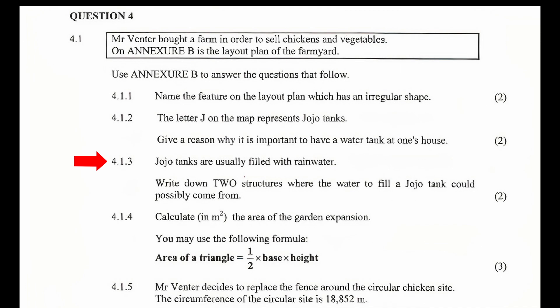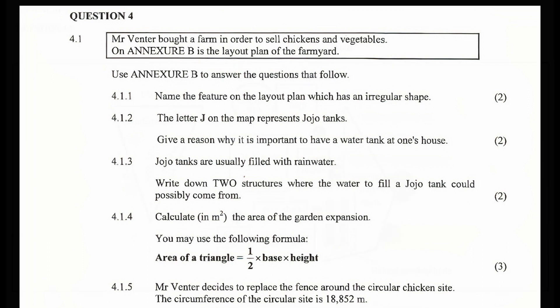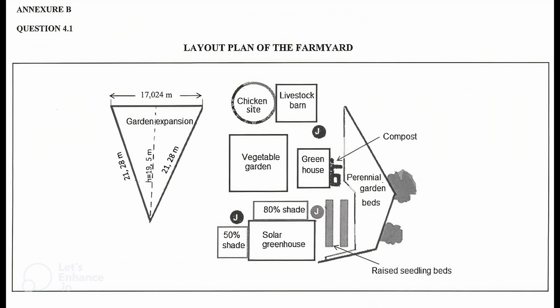4.1.3 — Jojo tanks are usually filled with rainwater. Write down two structures where the water to fill the Jojo tank could possibly come from. From the layout plan in Annexure B, we see there are three Jojo tanks placed around the farmyard — one near the solar greenhouse, one near the greenhouse, and one near the livestock barn. Structural sources of rainwater could be from the roofs or gutters of any two of these structures. We'll go with the solar greenhouse roof and the livestock barn roof.